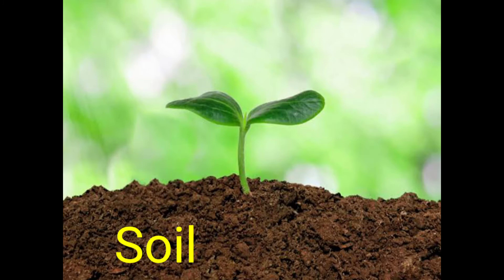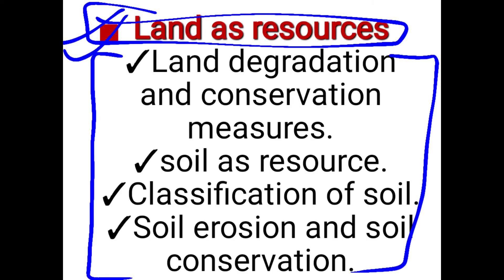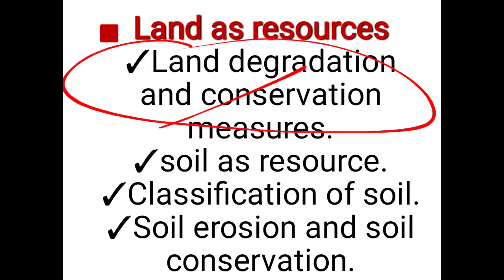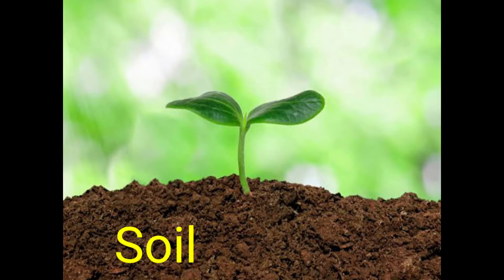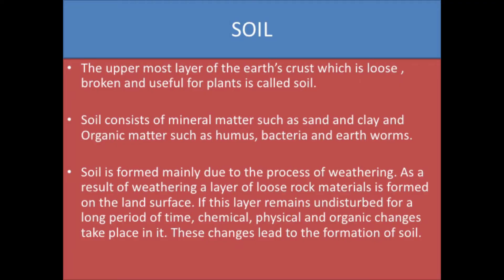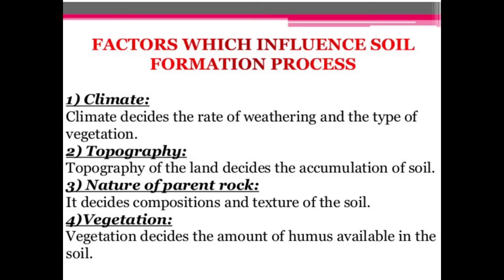Now we will start with our second topic: soil as a resource. Soil is the uppermost layer of the earth's crust, which is loose and can be broken easily using a tool like a plow. It is useful for the growth of plants. There are different factors that influence the soil formation process — the first is climate, which decides the rate of weathering, meaning the breaking of rocks.